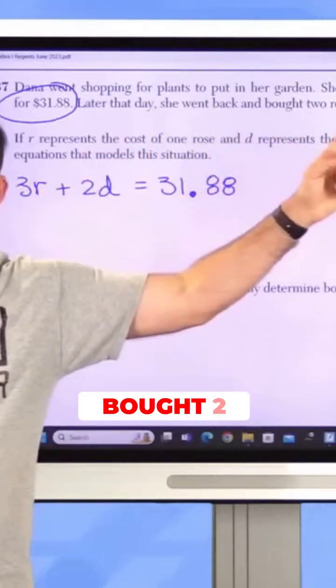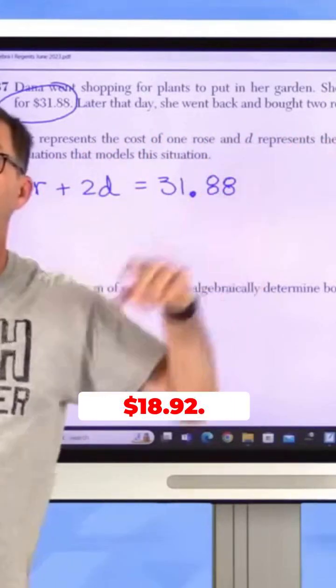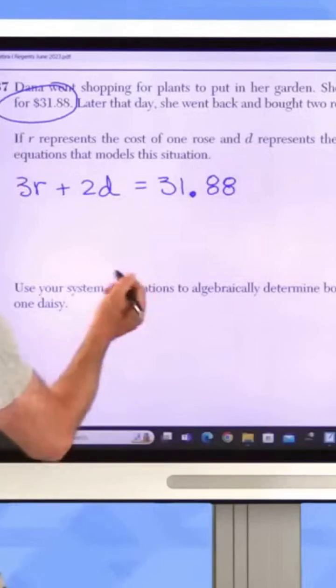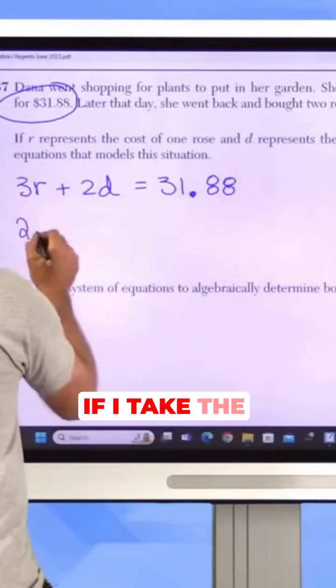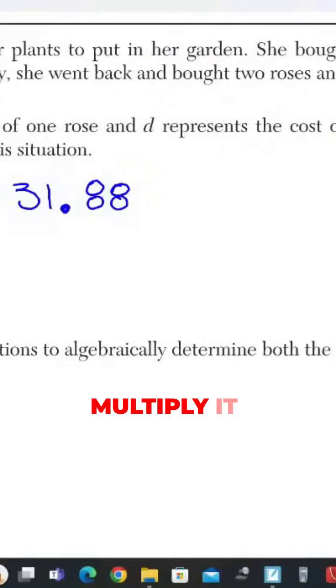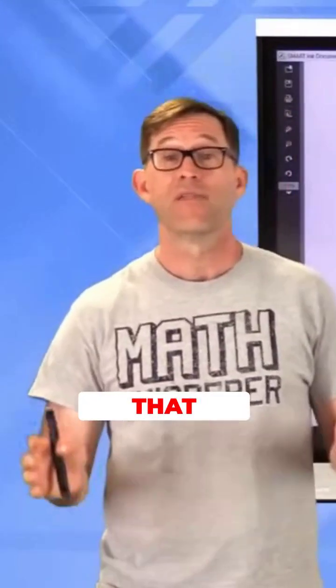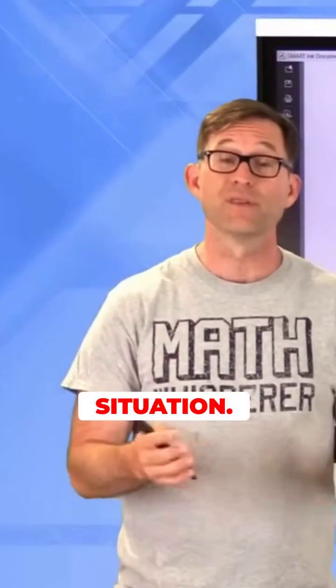Then she went back later and bought two roses and one daisy for $18.92. Same idea, right? If I take the cost of one rose and multiply it by two and add to it the cost of a single daisy, I'm now going to get $18.92. And that is simply the system of equations that represents or models this situation.